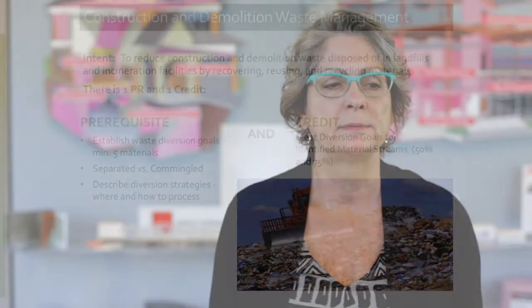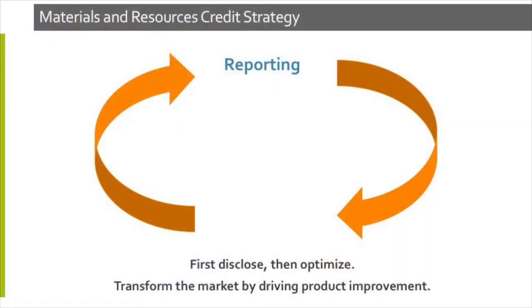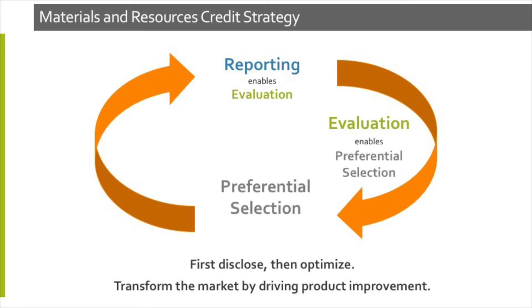Let's talk about the materials and resources credit strategy when it comes to material selection. LEED has established that reporting enables evaluation. The evaluation part of the credit is really identifying the transparency information for the different products. The thinking is that the more information architects can receive, the more they can have that evaluation process. It enables more preferential selection, which in turn drives innovation — and the circle keeps going. This is the strategy behind the building products disclosure credit.